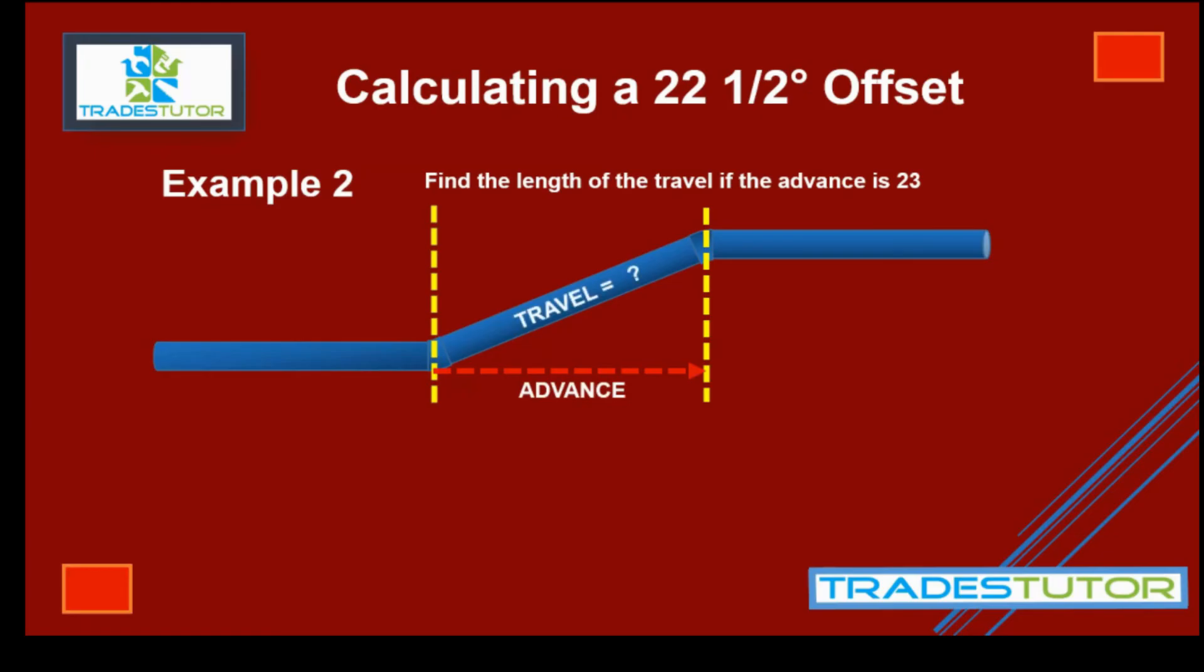So we're going to be, oh, and that's what we're trying to find is the travel right there. That's the formula we're going to use. So now we plug in the numbers. 23 times 1.08, it's as simple as that. And the travel ends up being 24.84.